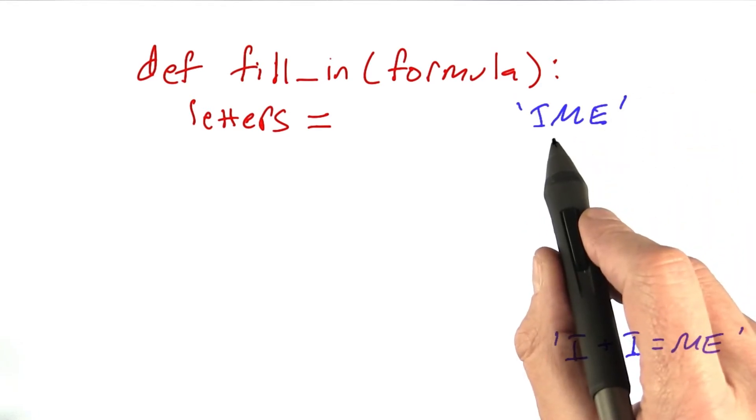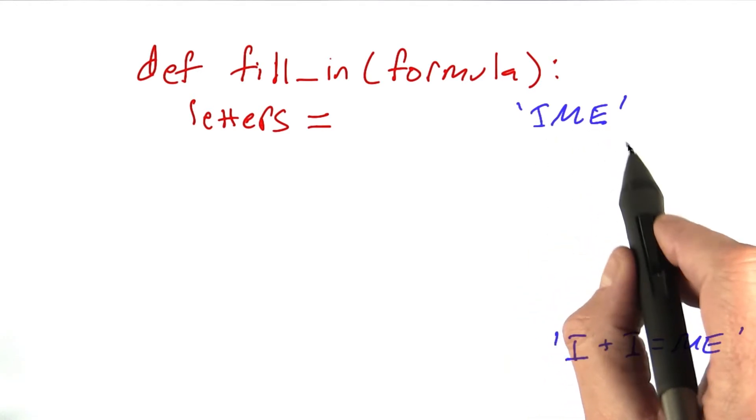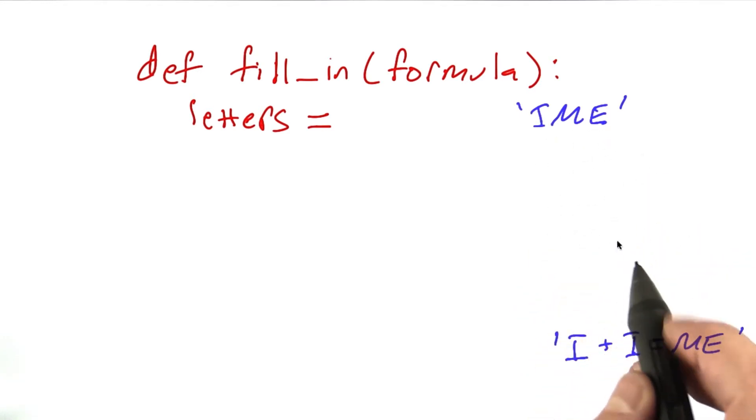So what are the possible digits that we want to replace these three letters with? Well, we can just iterate through all the three-digit numbers, but make sure that we're not duplicating any of those numbers.